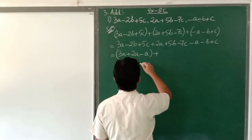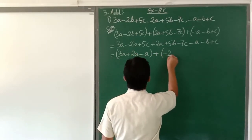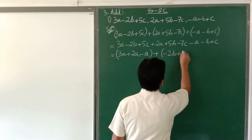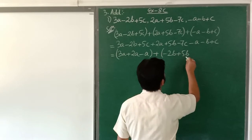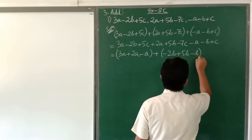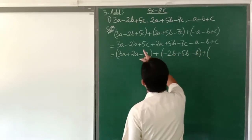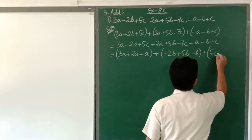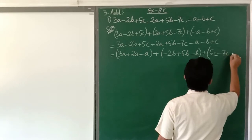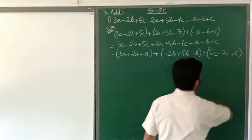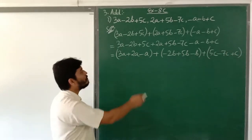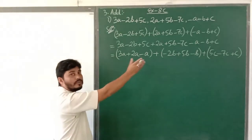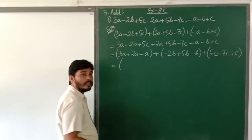Then for b: minus 2b, plus 5b, then minus b. Then for c: 5c, minus 7c, plus c. So now we have grouped the different like terms together.